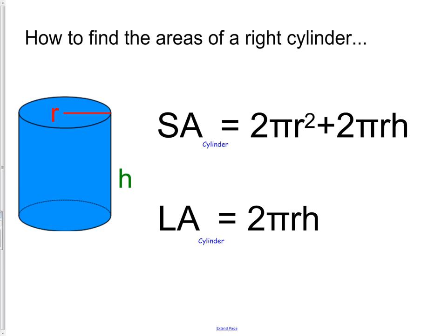We then have our area formulas. The surface area for a cylinder: 2πr², which would be two areas of circles, plus 2πr, the circumference of the circle, times the height of the cylinder.